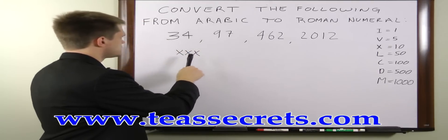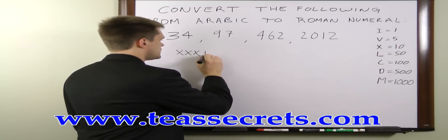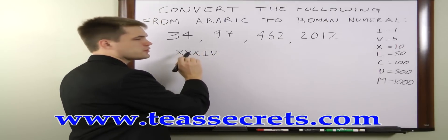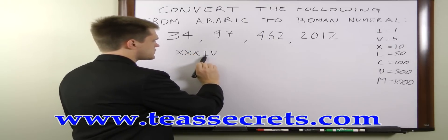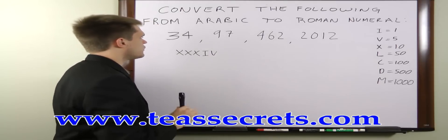so we got three X's. To get the four, what we're going to do is we're going to write an I and then a V because we can't have four of the same symbol in a row, so we're going to subtract one from five, so we write that IV. And so this is our answer for 34.